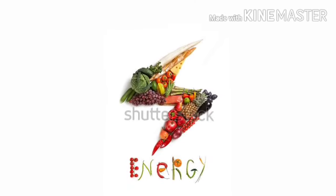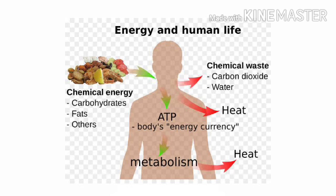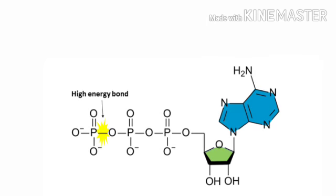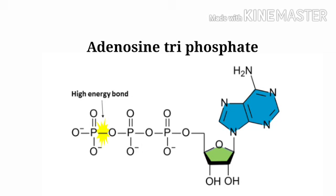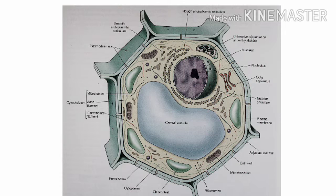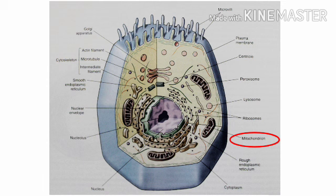As food is produced in the chloroplast, it needs to be converted into energy, because it is energy that is necessary to run biological processes. For this reason, there is a specific organelle in eukaryotic cells called mitochondria. Its sole purpose is to produce energy in the form of a specific molecule called adenosine triphosphate, or ATP. It is called an energy currency, as it behaves like one unit of energy in a cell. For that reason, mitochondria can be found in both animal and plant cells.